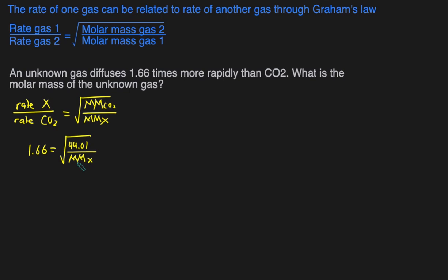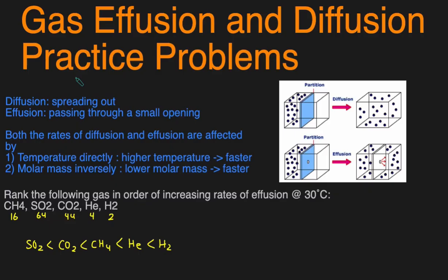But we do know that the molar mass of CO2 is 44.01. Then we can just solve for the molar mass of X by first squaring both sides to get rid of the square root. That'll give us 2.7556 equals 44.01 divided by the molar mass of X. Then we can just cross multiply and divide. We'll get molar mass of X equals 44.01 divided by 2.7556. Enter that into the calculator and we'll get that the molar mass of X is approximately 16 grams per mole, which is consistent with what we originally thought. This matches the expectation that this gas is going to be lighter than CO2 because it's moving more quickly.